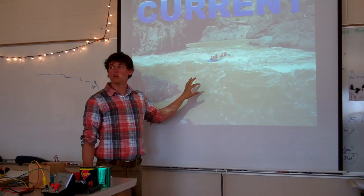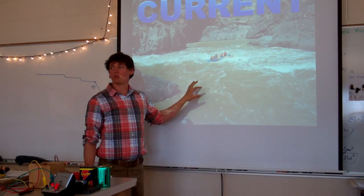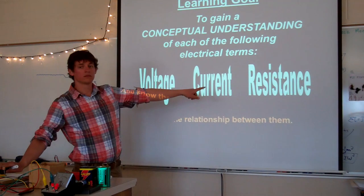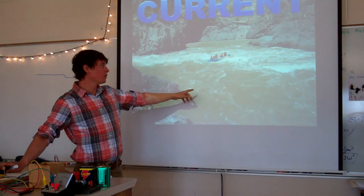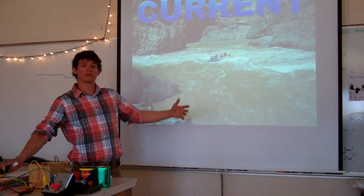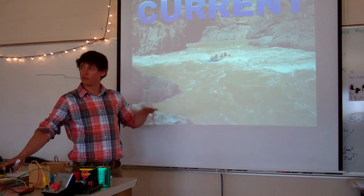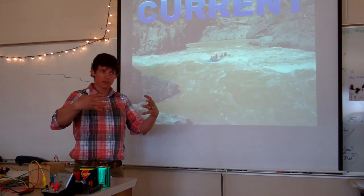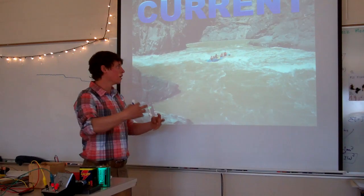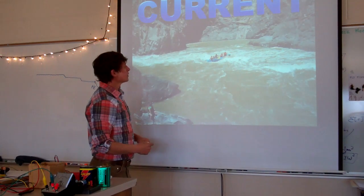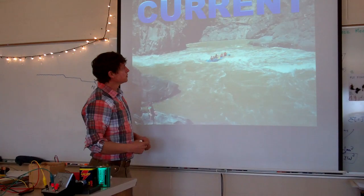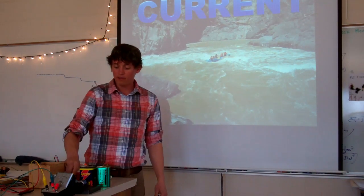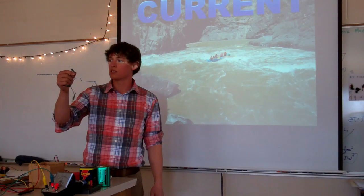Now there's something that slows electricity down. What word is that? Resistance. Resistors. Resistance. In a river, what slows the water down? Rocks. The river bottom. Branches hanging in. We call those strainers in the rafting lingo.